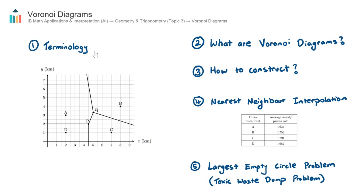From here on in, I'm going to use these words that I'm about to introduce, and I recommend that you do also. In a Voronoi diagram, which is this diagram that you can see here, there are coordinates — coordinates A, B, C, and D. We would call them coordinates when talking about coordinate geometry. However, when we're talking about Voronoi diagrams, we actually call these sites.